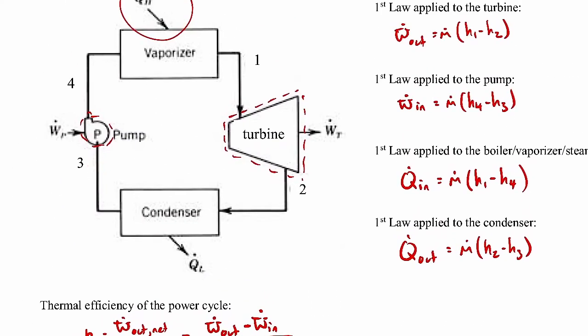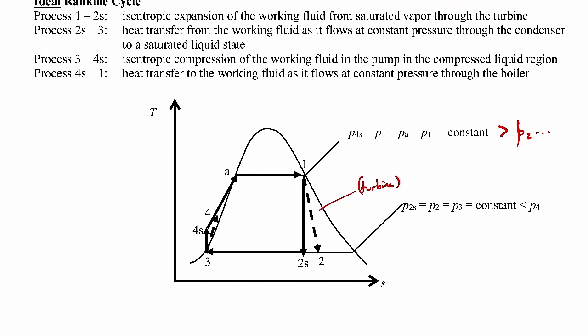As we go through the pump — in the real case from state 3 to state 4 — it's a compressed liquid, and entropy increases because the pump has isentropic efficiency typically less than 100%. State 4 is at a slightly higher specific entropy than state 3. For the ideal case with 100% isentropic efficiency, we go straight up in an isentropic process to state 4s, still a compressed liquid. Then from state 4s or 4 back to state 1 is the boiler or steam generator.